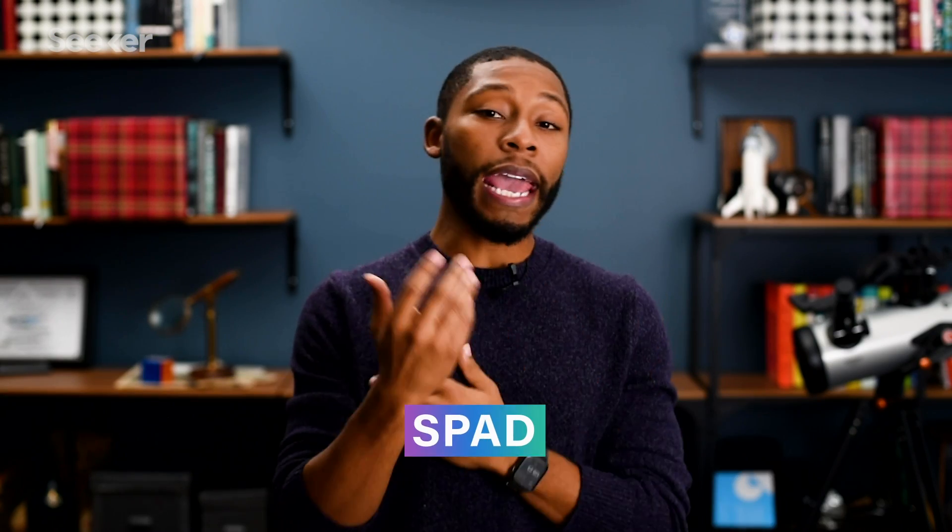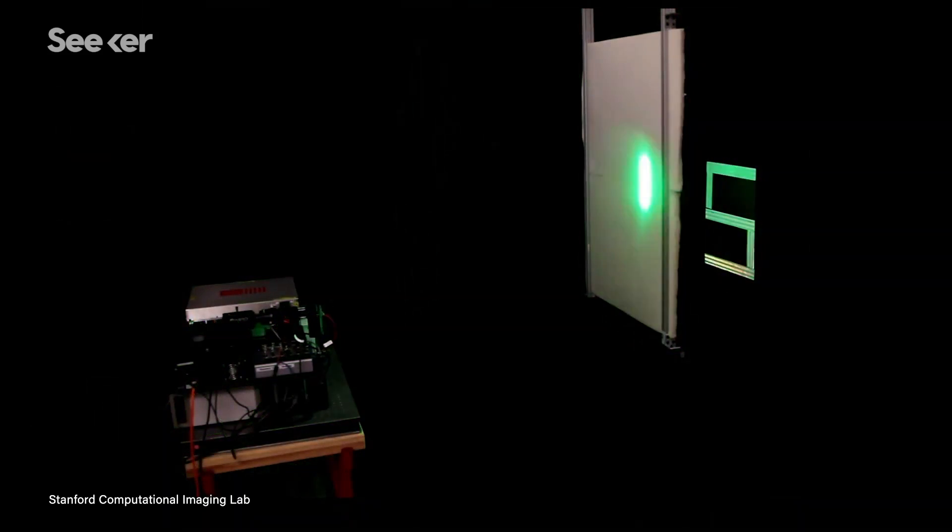CDT is a process that uses a single photon avalanche diode and pulsated laser systems to effectively see through a medium. So what exactly does that mean? Let me explain it this way. With a short pulse of light, a laser illuminates a point on a surface.